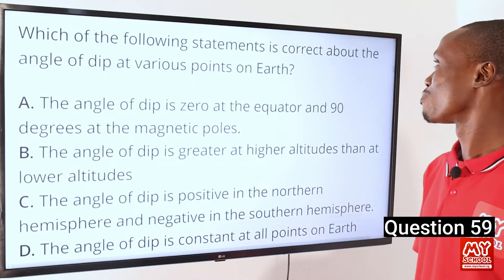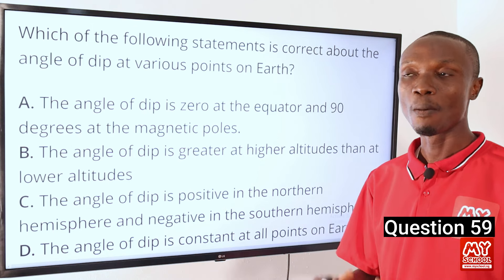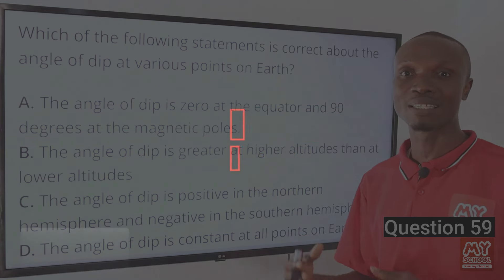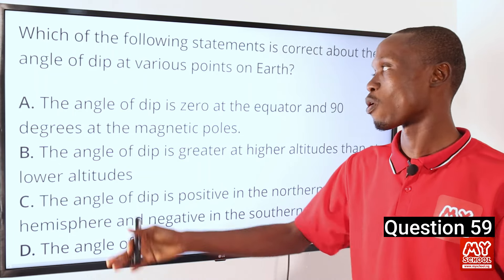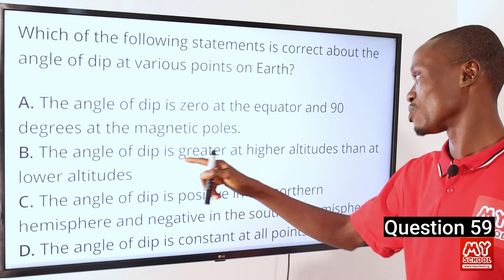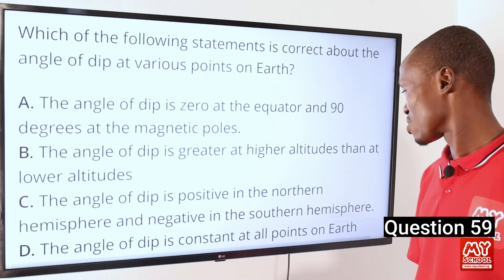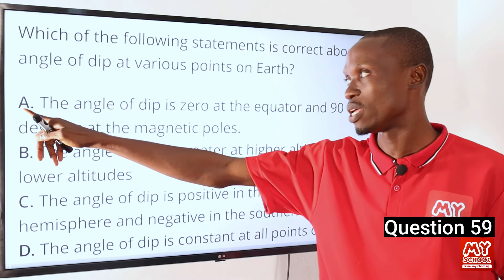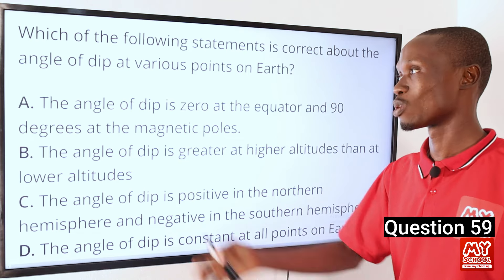Question 59. Which statement is correct about the angle of dip at various points on earth? The angle of dip (angle of inclination) is the angle between the direction of the earth's magnetic field and the horizontal. It varies from 90 degrees near the geographical poles to 0 degrees near the equator. The correct answer is option A: the angle of dip is 0 at the equator and 90 degrees at the magnetic poles.